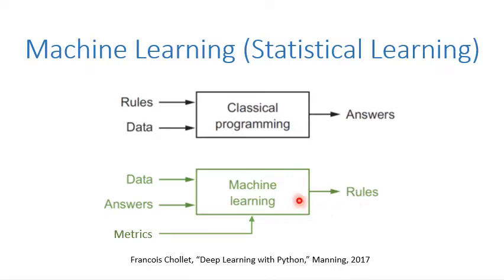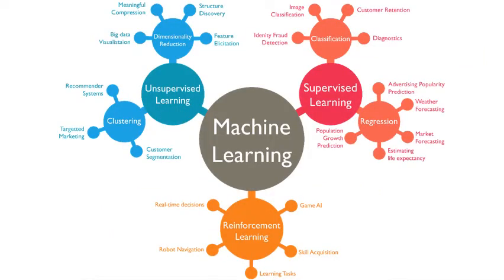So in machine learning, we provide data — mostly data — and sometimes answers and a metric. Then machine learning will learn the rules automatically. Generally speaking, there are three types of machine learning: supervised learning, unsupervised learning, and reinforcement learning.